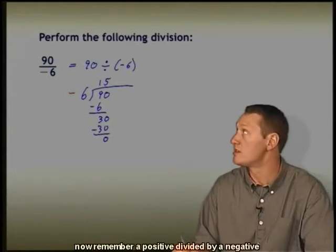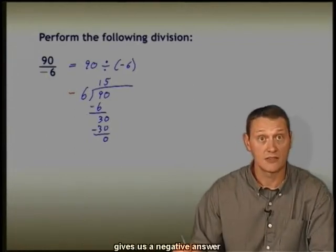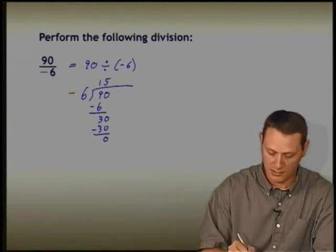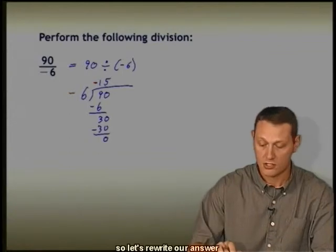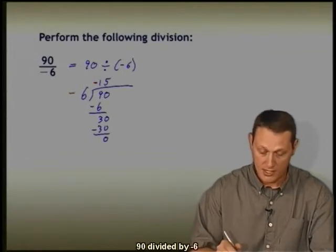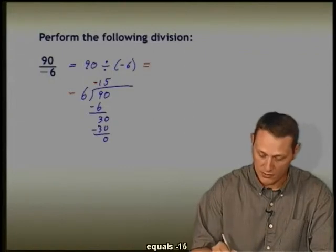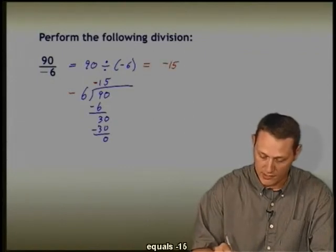Now remember, a positive divided by a negative gives us a negative answer. So let's attach that negative. Let's rewrite our answer: 90 divided by negative 6 equals negative 15.